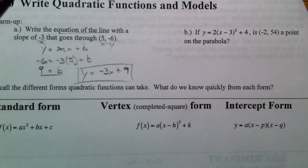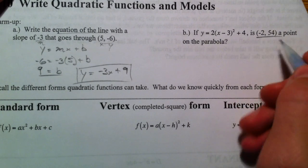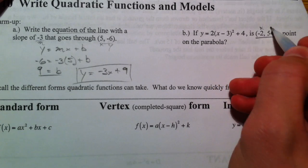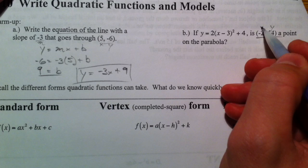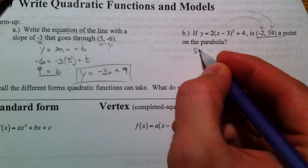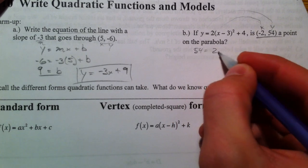So we're going to do something very similar with this. To know if negative 2, 54 is a point on the parabola, this is an x and this is a y, so negative 2 can go in for x, and y can go in for 54, and we can see if it works out.